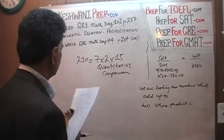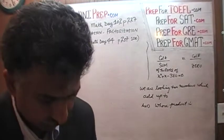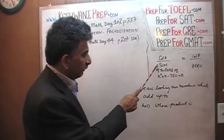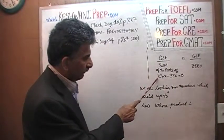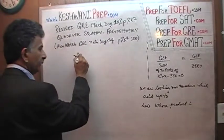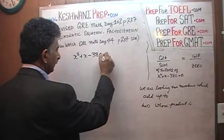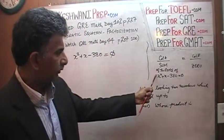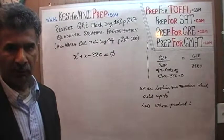Enough of the talk, let's start. Here is the question on the blackboard right here. We are asked to compare the sum of the roots of this equation: x squared plus x minus 380 equals 0. We are asked to compare the sum of the roots of this equation versus 0, a big fat 0.